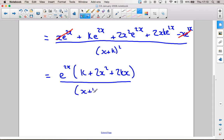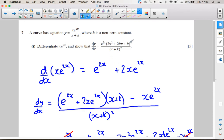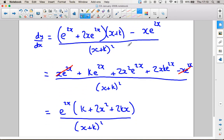All over x plus k squared. Hopefully that's what they had up at the top. They had a k, a plus 2kx, and a plus 2x squared, which is what we've got.